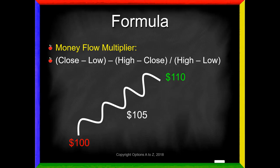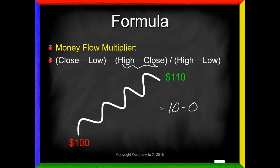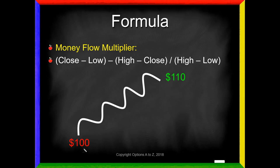What if the current stock price was actually at 110 — the stock closed at the high? Close minus the low gives us 10. The high minus the close is 110 minus 110, or 0. So 10 minus 0, divided by 10, equals 1. So if the stock is at the high, the money flow multiplier is 1. And if the closing price is down at the low, close minus low is 0, minus the high minus close of 10, gives minus 10, divided by 10 equals negative 1.